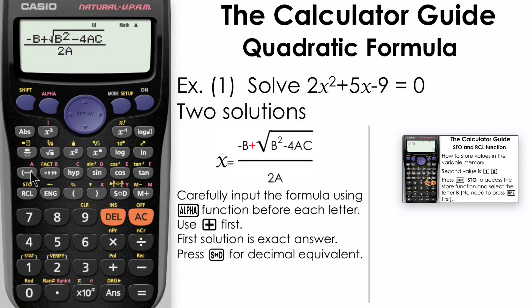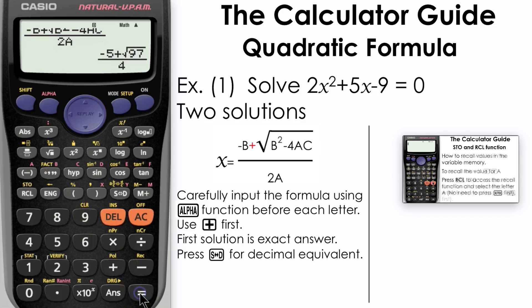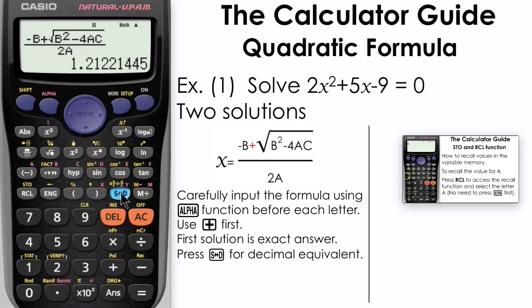Press equals and here's your answer. The first solution given is an exact answer, which in some circumstances you may want. We want a decimal answer, so we need to press S⇔D for the decimal equivalent, and here is our answer: 1.2122 to 4 decimal places.